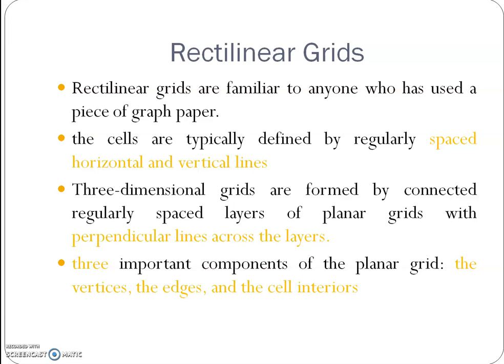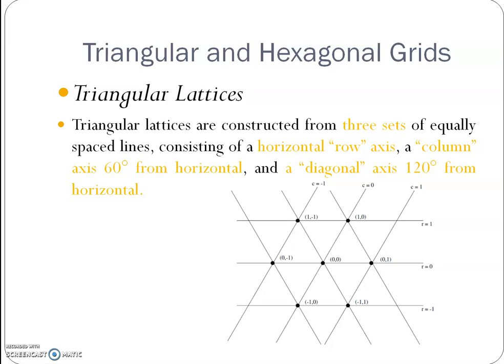We will now discuss triangular and hexagonal grids. Triangular grids are also called triangular lattices. A triangular lattice is constructed from three sets of equally spaced lines: a horizontal row axis, a column axis at 60 degrees from horizontal, and a diagonal axis at 120 degrees from horizontal.